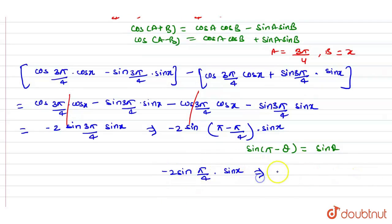So it will be minus of 2, we know the value of sin π/4 is equal to 1 by root 2 into sin x.